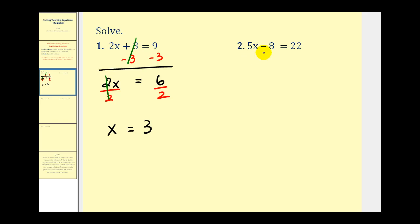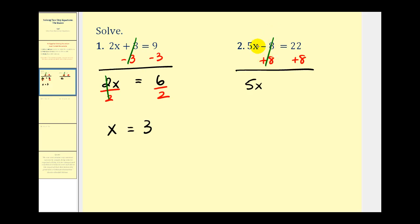Number two, we have five x minus eight equals twenty-two. Again, five x means five times x, minus eight equals twenty-two. So we need to undo the addition or subtraction first. The opposite of minus eight would be plus eight, and we can do this as long as we do the same on the right side. On the left, we have five x, and then minus eight plus eight — that's zero. On the right, we have twenty-two plus eight, that would be thirty.